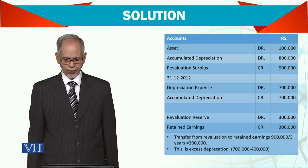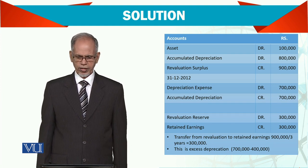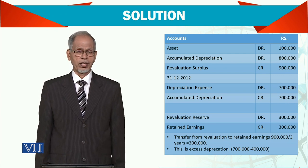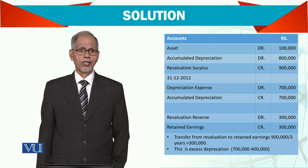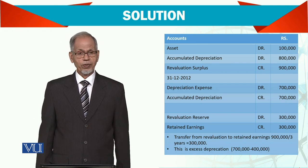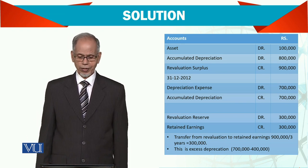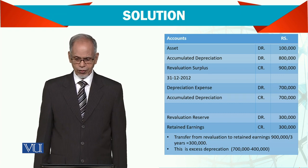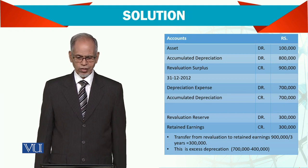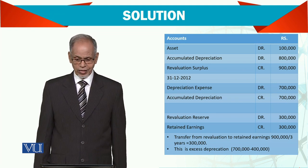Now see the accounts. We have Assets, Accumulated Depreciation, and Revaluation Surplus. The asset was initially 2 million, and now it is 2.1 million, so we are debiting another 100,000 to the asset account. The accumulated depreciation which we had credited is now being reversed by debiting it, and the surplus of 900,000 is credited to Revaluation Surplus. The depreciation expense for 2012 is 700,000, and the accumulated depreciation is 700,000.